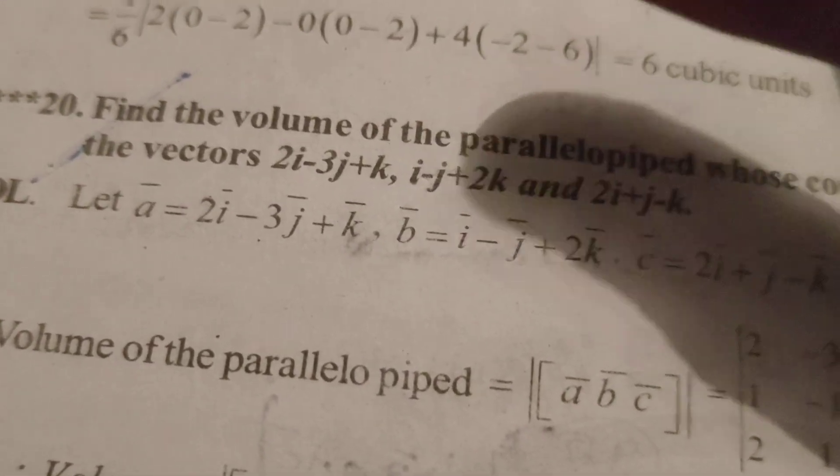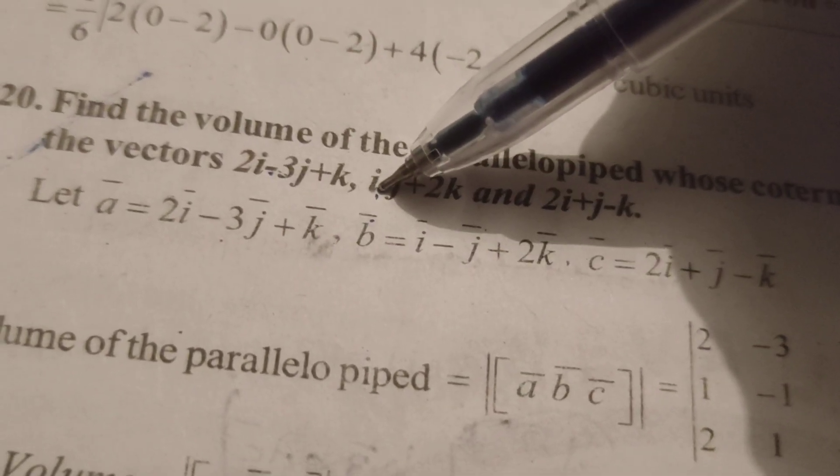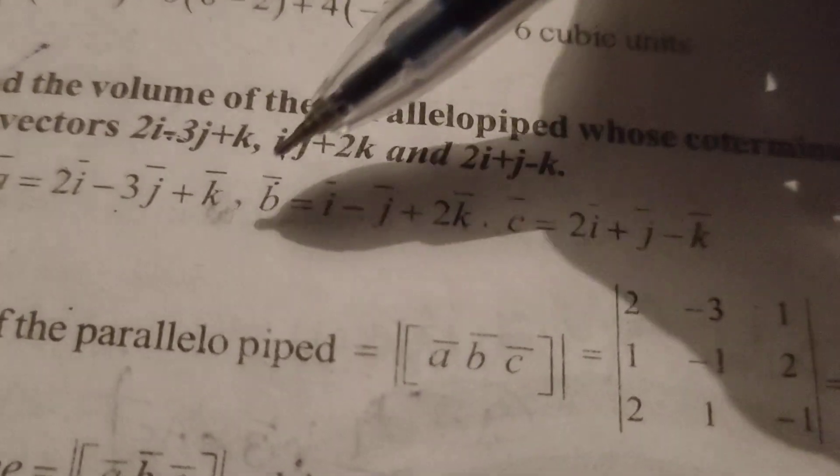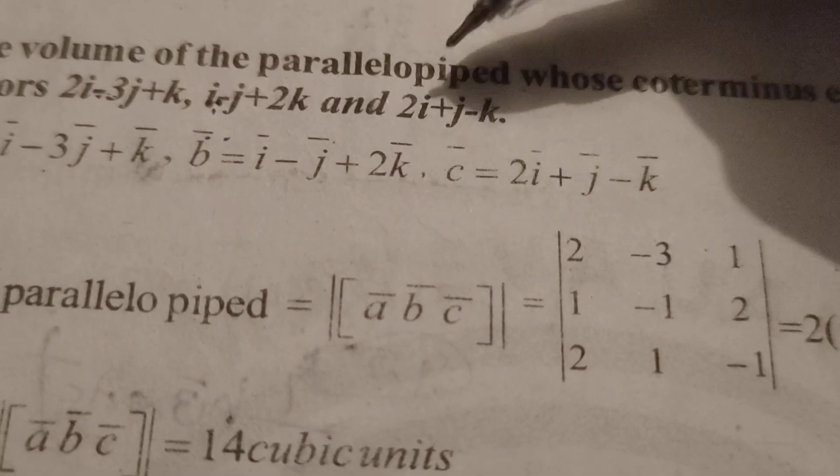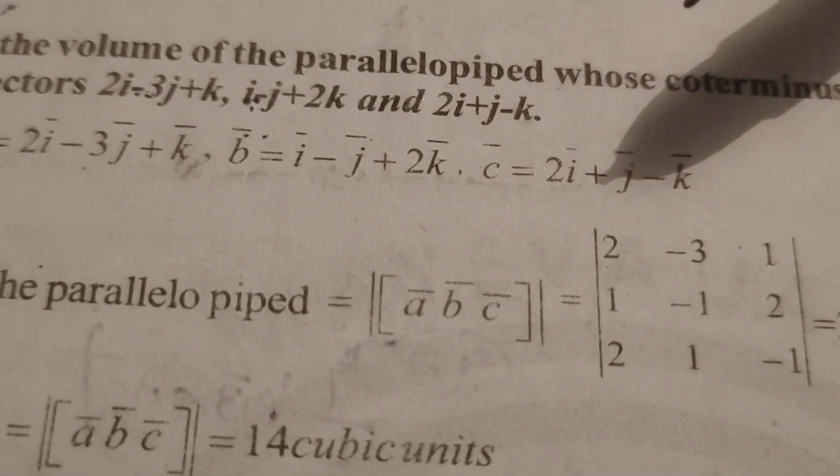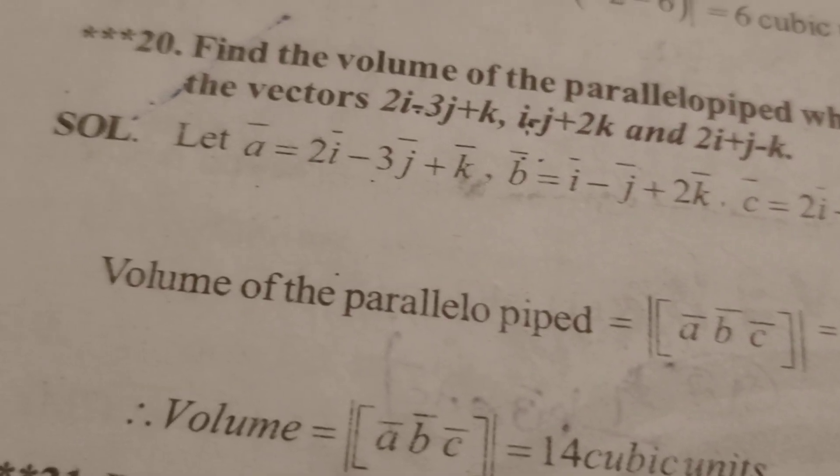Find the volume of the parallelepiped whose coterminous edges are represented by the vectors 2i bar minus 3j bar plus k bar, i bar minus j bar plus 2k bar, and 2i bar plus j bar minus k bar.